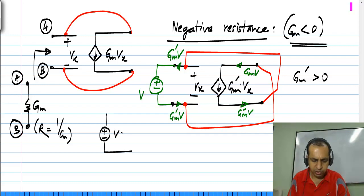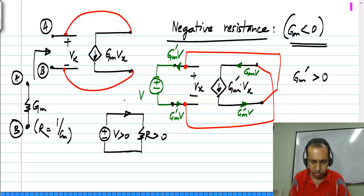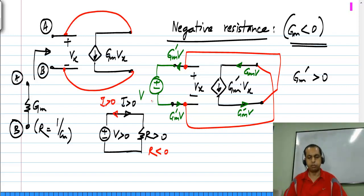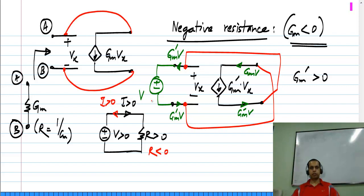If you have a positive resistance and a positive voltage V, the current will flow in this direction. But if this resistance is less than 0 — that is, if the resistance is negative — then the current will flow in the other direction; the current in that direction will be positive. It will push the current back into the voltage source, and that is what a negative resistance does. So that is one example of exotic things that can be synthesized using control sources.